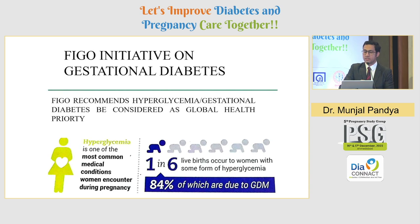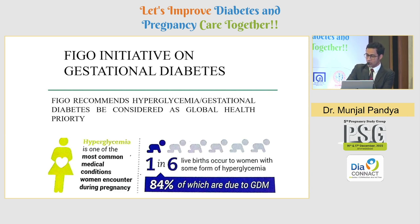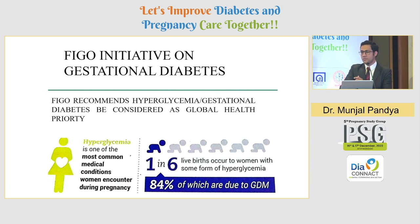One in six live births occur to females with some form of hyperglycemia, and out of those, 84% would be due to GDM. So this is a huge number. We also know that obesity and diabetes fall in the range of malnutrition — it is not just about the patient being cataclysmic. Malnutrition is not solely concerned with starvation or low birth weight.